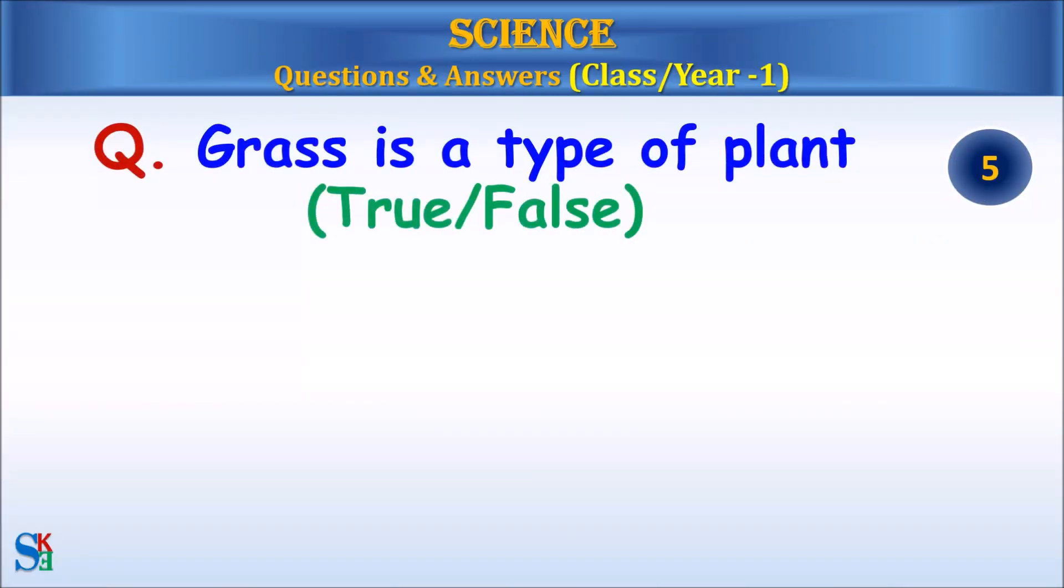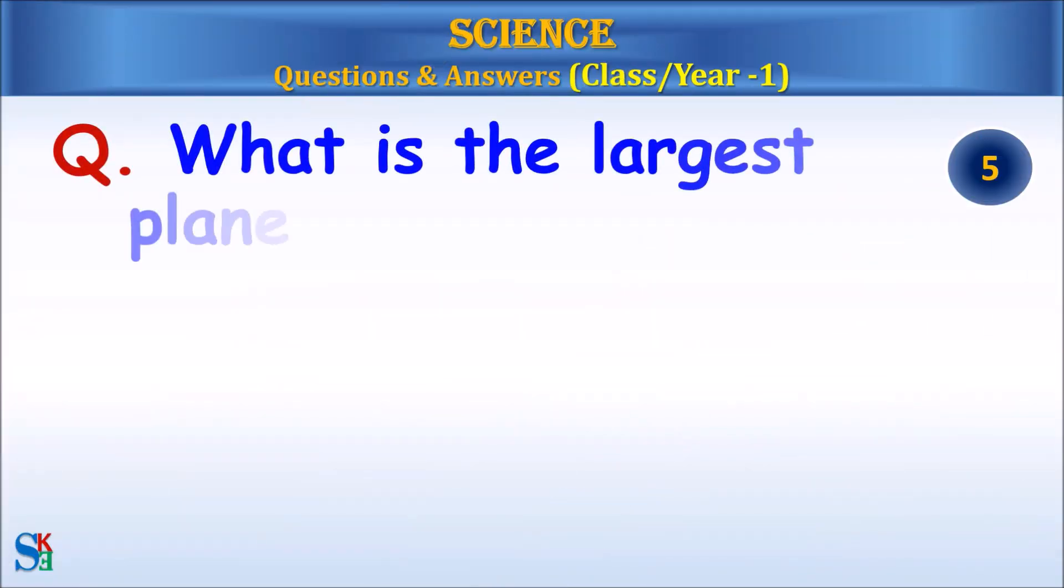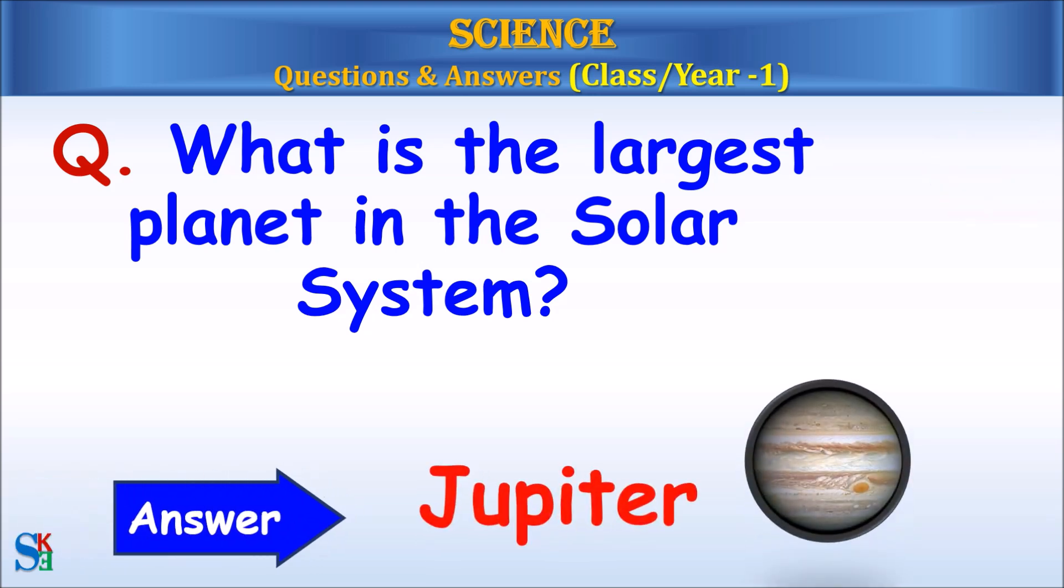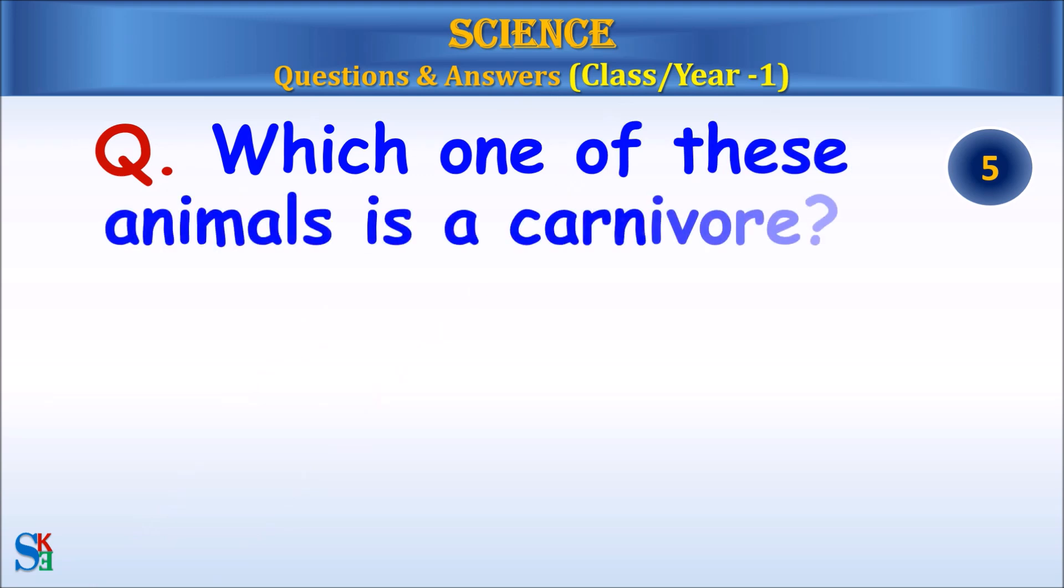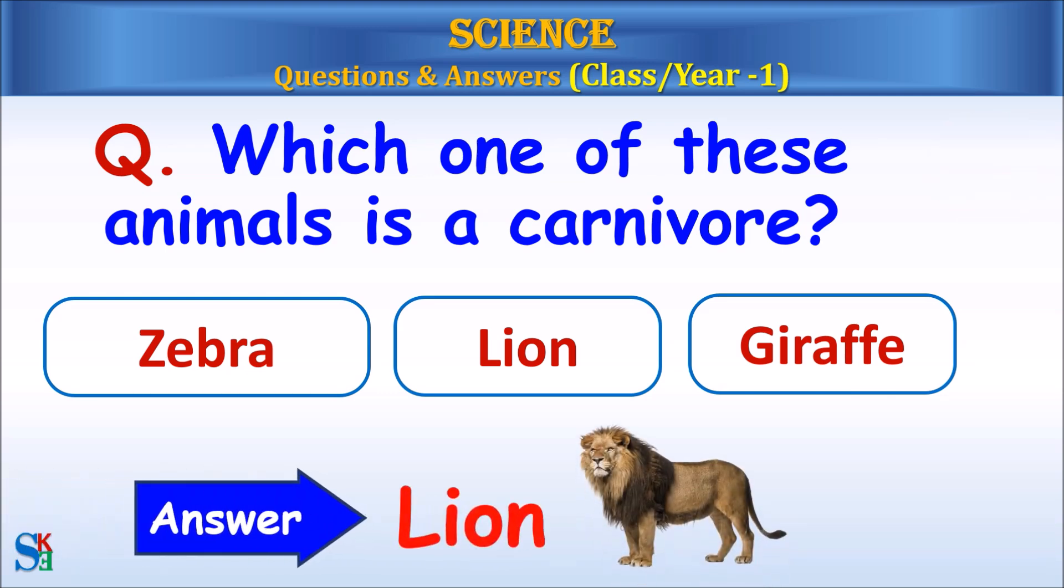Grass is a type of plant, true or false? Answer: true. What is the largest planet in the solar system? Answer: Jupiter. Which one of these animals is a carnivore, zebra, lion, or giraffe? Answer: lion.